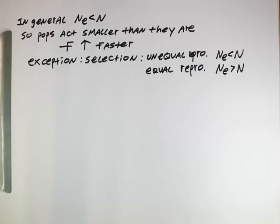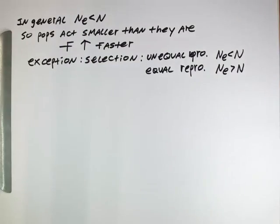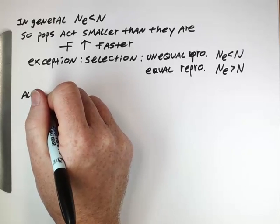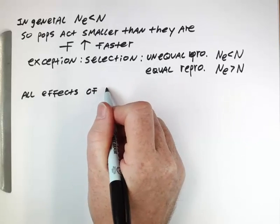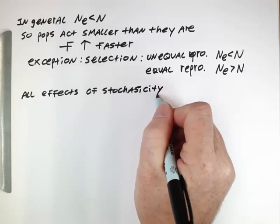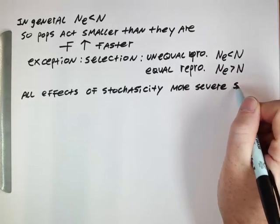We're kind of all waiting for that magical day when we're able to fix the world and re-release them back into the wild. But until that point, we want to maintain their genetic diversity while they are in captivity. And to return to this idea, the effect of population size smaller than the actual population size is increasing. And the overall point here is that all the effects of stochasticity, this randomness, they're more severe in smaller populations.